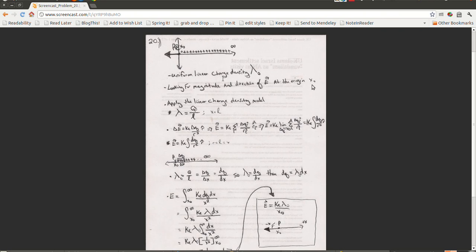But x0 doesn't have to be at the origin. x0 is where our line of charge starts, and that could be a point located somewhere off to the right of the origin.